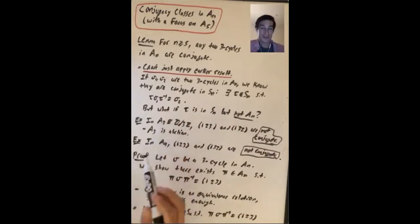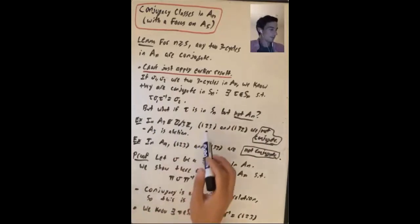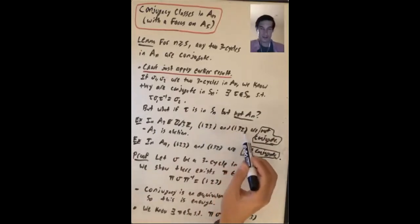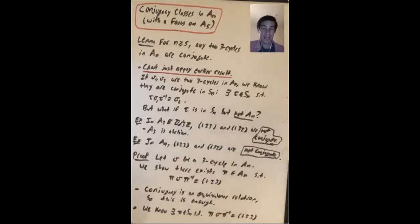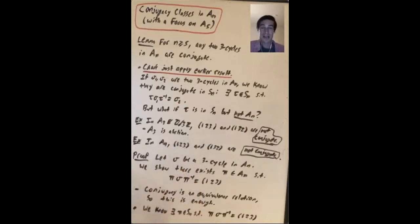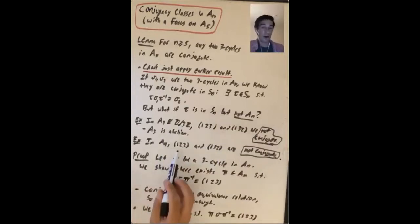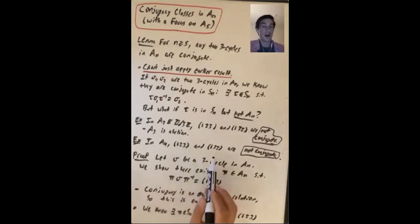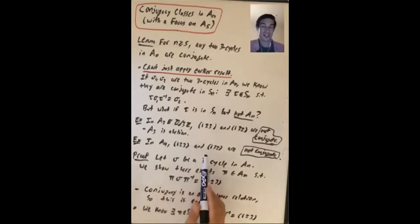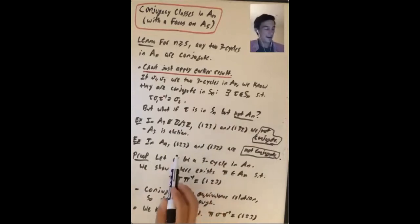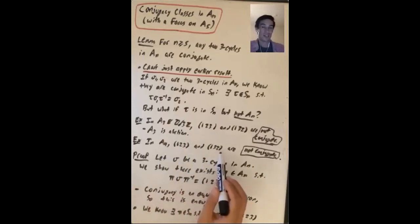In A3, which is isomorphic to Z mod 3Z — a cyclic group of order 3 — the permutations (1,2,3) and (1,3,2) are two 3-cycles but they are not conjugate in A3. A3 is abelian, and in an abelian group every element is in its own conjugacy class. A less obvious example: in A4, these two 3-cycles (1,2,3) and (1,3,2) are still not conjugate to each other. You should check — try to find a permutation tau where tau·(1,2,3)·tau⁻¹ = (1,3,2), and you'll see that you can't do it.